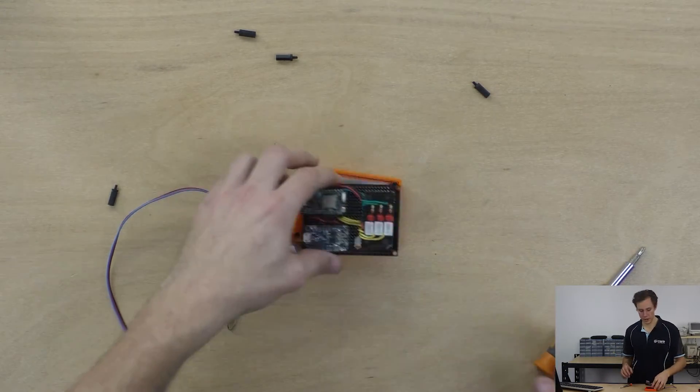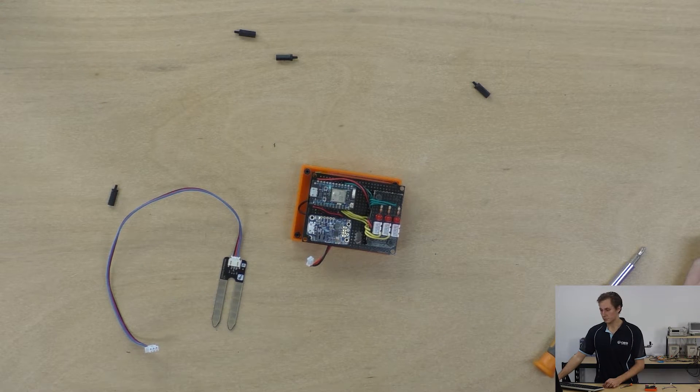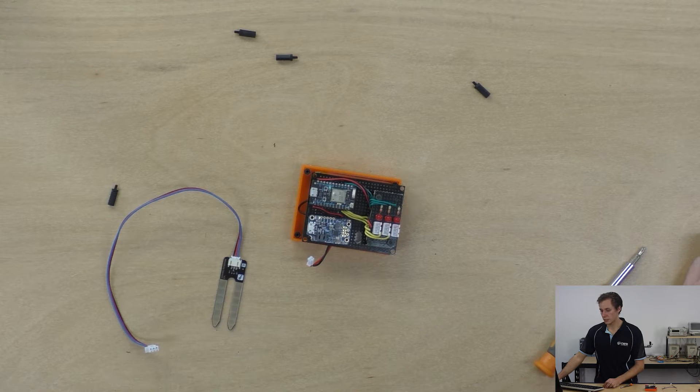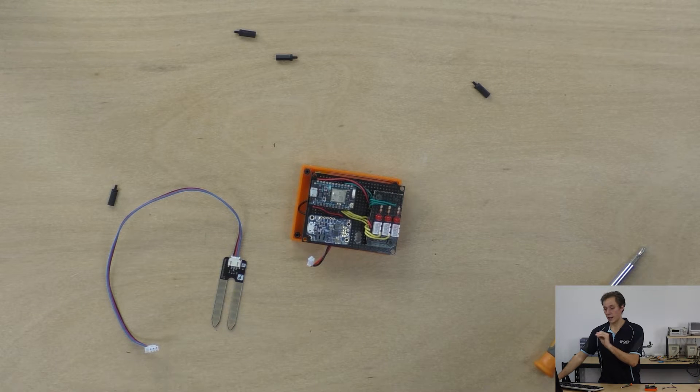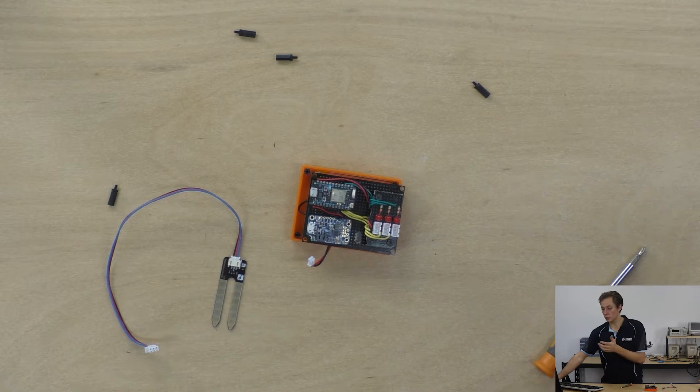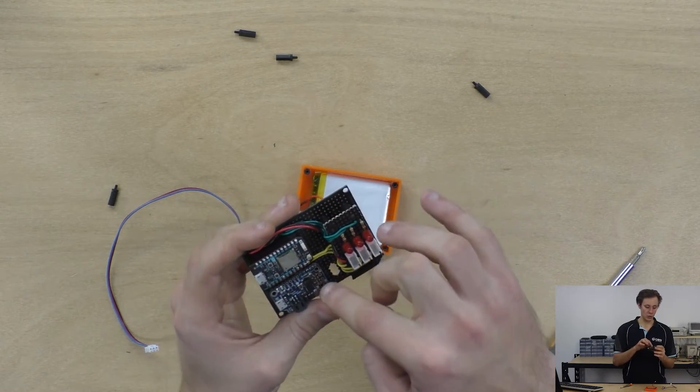And there's nothing fancy going on with the code. You've just got some particle cloud functions so I've got a separate function for each event so plant one plant two plant three and then also low battery.